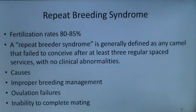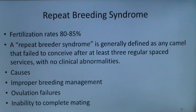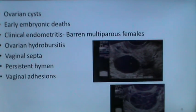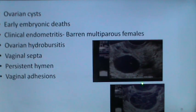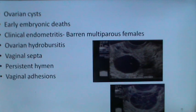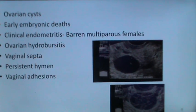Repeat breeding syndrome in camels: fertilization rates are 80 to 85%. A repeat breeder is defined as any camel that failed to conceive after at least three regularly spaced services with no clinical abnormalities. Causes include improper breeding management, ovulation failures, or inability to complete mating. Ovarian cysts are uncommon in India and Pakistan but have been seen in camels in the UAE. Female camels with ovarian cysts may secrete progesterone and show tail cocking, confusing breeders into thinking they are pregnant.